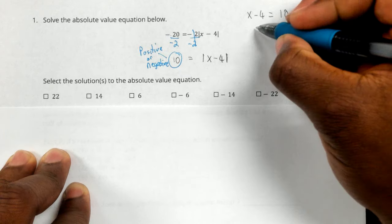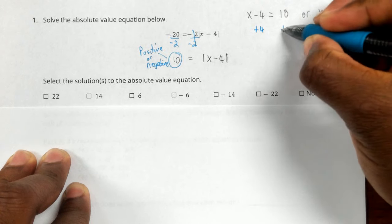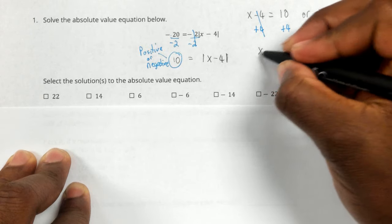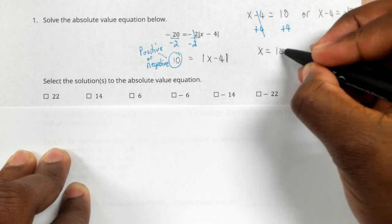So we're going to find the value of x by adding 4 to both sides. This gets cancelled, and one of our x values is 10 plus 4 is 14.